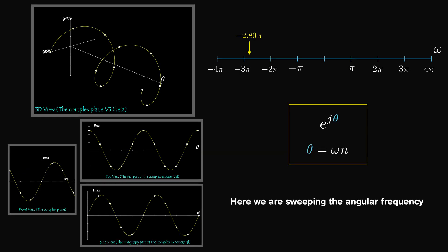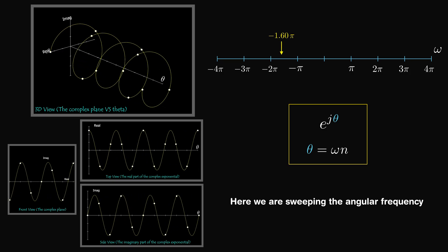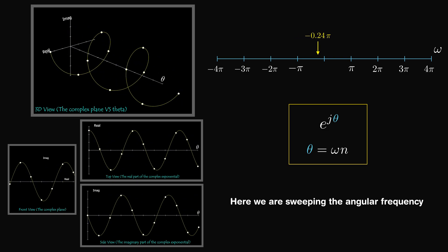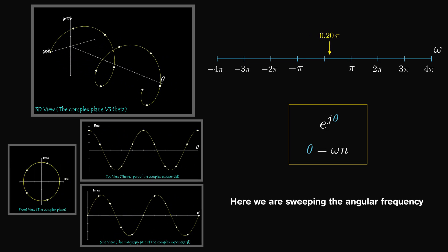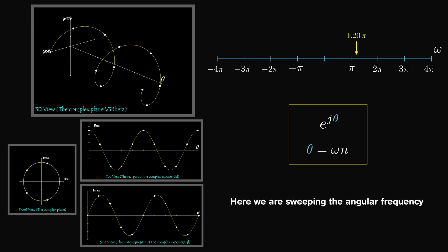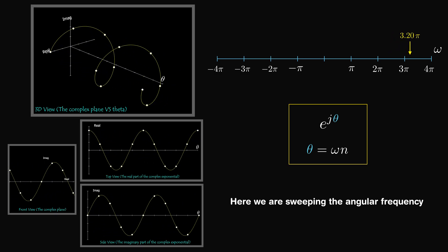Discrete time complex exponentials have a limited range of frequencies because of aliasing — they repeat every 2π of omega. For instance, a discrete time complex exponential with omega equal to 0.2 times 2π is the same signal as at 1.2 times 2π, 2.2 times 2π, 3.2 times 2π, and so on. So a discrete time complex exponential signal has a range of frequencies of width 2π, and any frequency outside that range has its own alias inside that range.